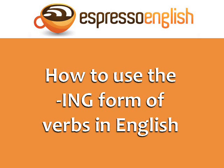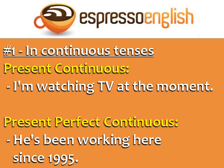How to use the ING form of verbs in English. Number one: use the ING form in continuous tenses when an action is in progress.